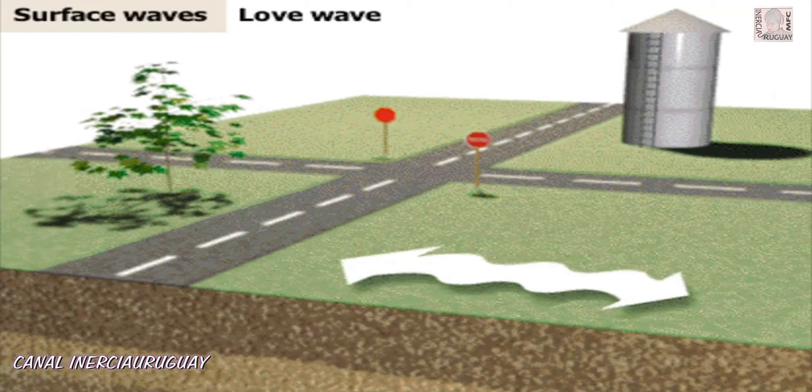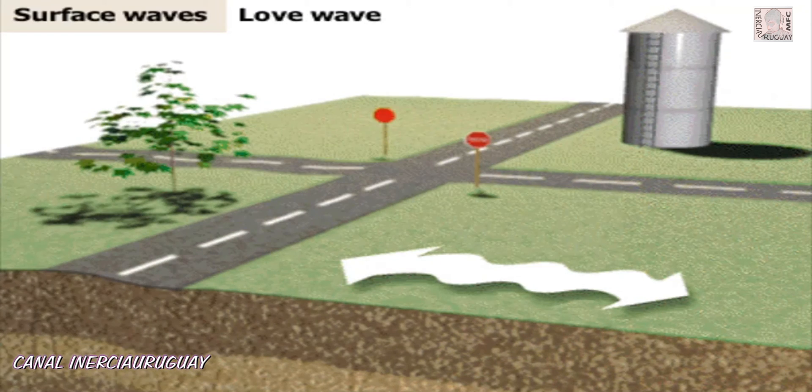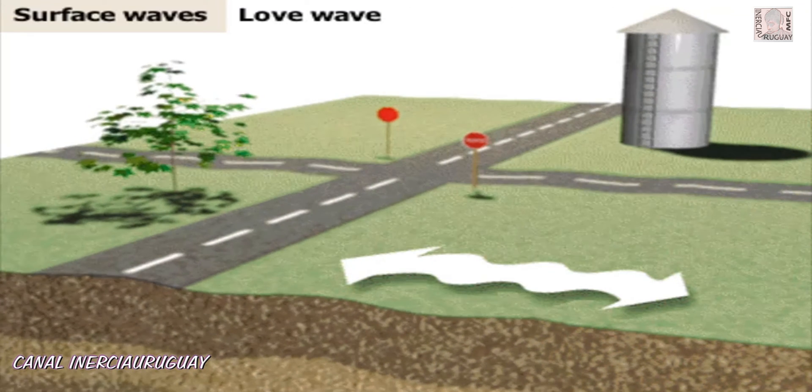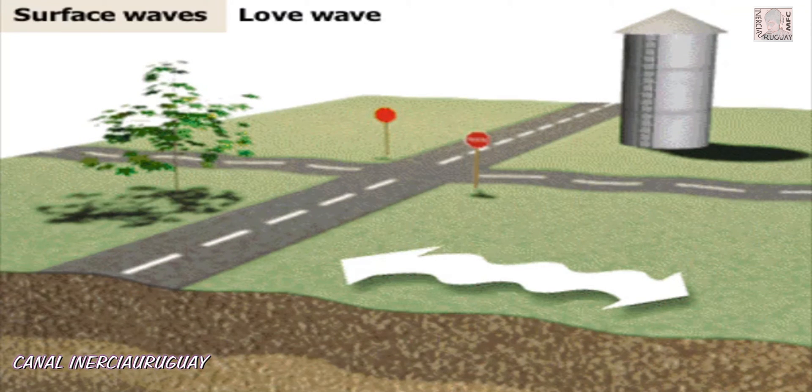A love wave causes side to side motion perpendicular to its direction of travel. It can cause damage by breaking roads and pipes.